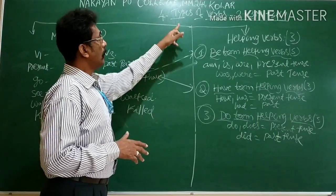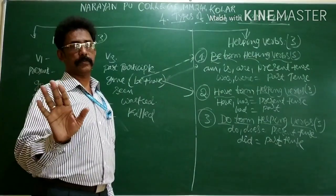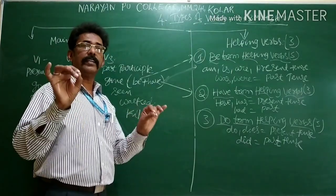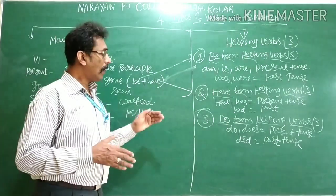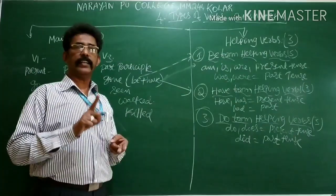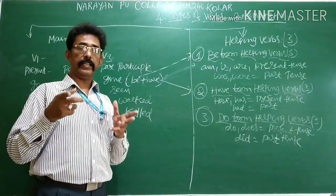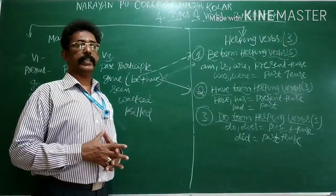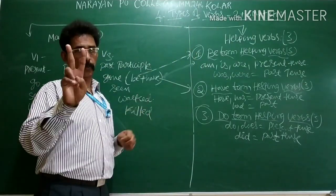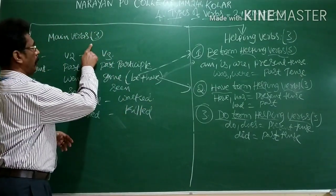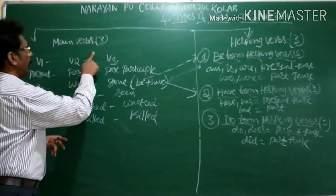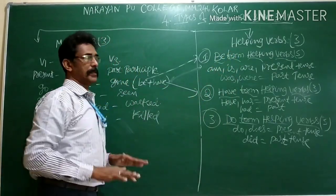Now, how many types of verbs are there? I will say only two. According to the need of first PUC and second PUC, whatever I am going to teach you now onwards, it will be helpful to you for both first year and second year — not only for PUC, it is important in your life, at the degree level also. Please follow my teaching. Types of verbs: two. What are those two? One is main verbs, second is helping verbs.